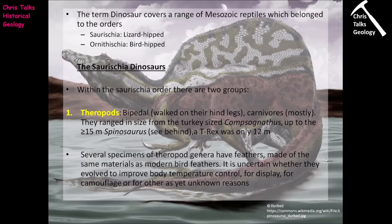Some specimens of theropod dinosaurs have feathers, and they appear to be made of the same materials as modern-day bird feathers, suggesting a link between theropods and birds. It's actually quite uncertain why feathers evolved. The most obvious reason is body temperature control; however, there's also the possibility they evolved for display purposes during mating, for camouflage to break up an outline and be harder to spot, or possibly some as-yet-unknown reason. All we can say is feathers definitively appear within the theropod dinosaurs.